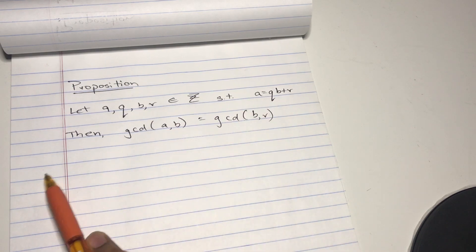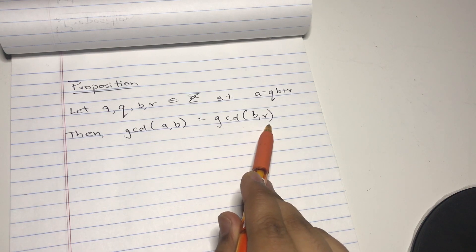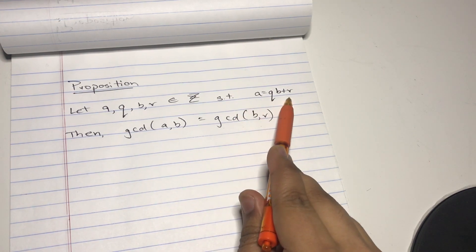Then the greatest common divisor of a and b equals the greatest common divisor of b and r. You obviously know that this is the quotient remainder kind of equation.